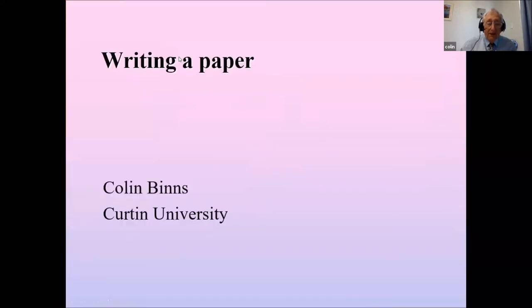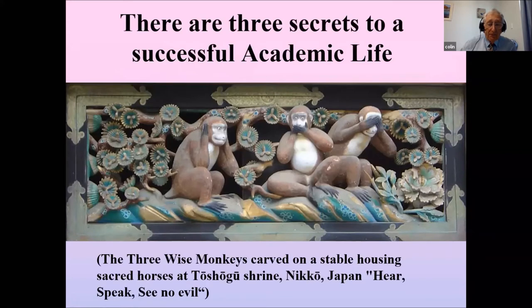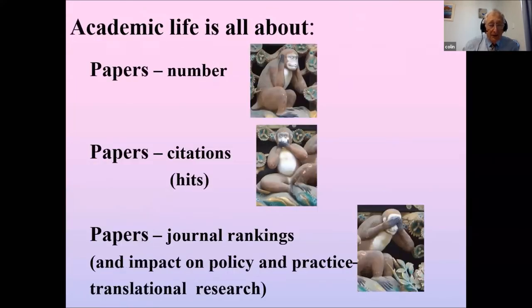Good morning everybody from sunny Western Australia. I'm going to talk about writing an academic paper from the perspective of the Asia Pacific Journal of Public Health — your journal — and we invite you to submit papers to it. There are three secrets to a successful academic life: papers, papers, and papers. To have a successful career and be promoted, you've got to publish a lot, get citations, and publish in high-ranking journals.